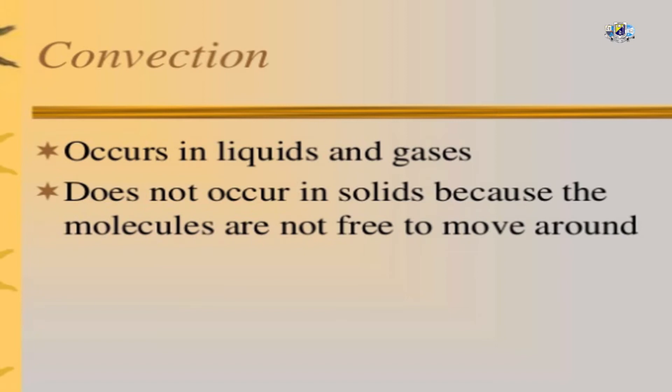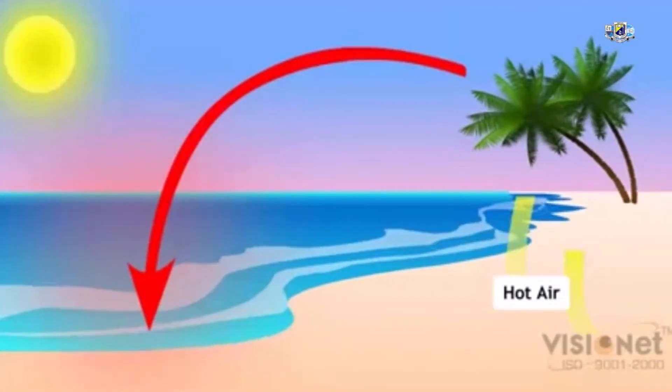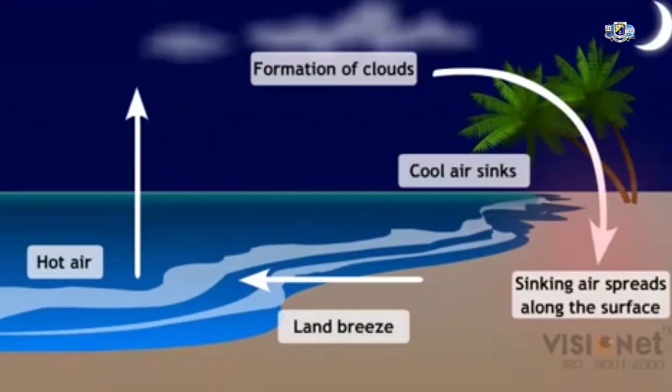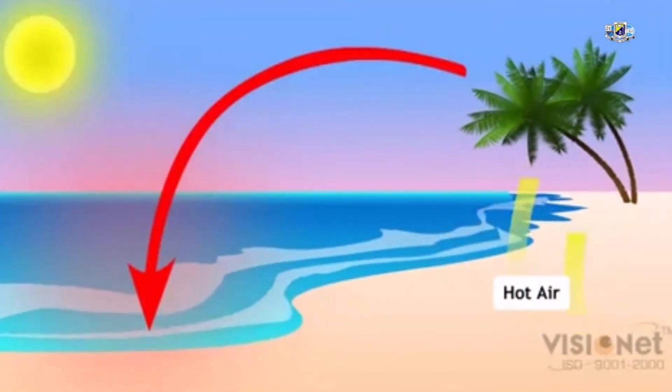Convection occurs in liquids and gases. It does not occur in solids because the molecules are not free to move around. In gases, when you heat a gas, the hot gas rises up while the cold gas goes down, until equilibrium is reached. This process of convection occurs in land and sea breezes — that is why at night the land is cold and the sea is warm, with the reverse being the case during the day. When you heat a liquid from the bottom, hot liquid rises to the top and replaces the cold liquid that goes back to the bottom, and this cycle continues until the whole liquid attains thermal equilibrium.